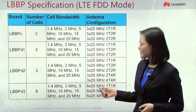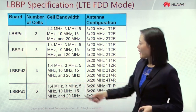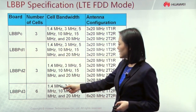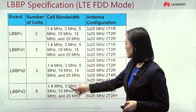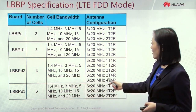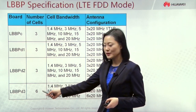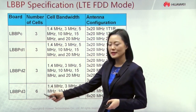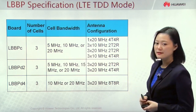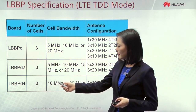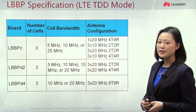This table lists four types of LBBP working in FDD mode: LBBP-C, D1, D2, and D3. Notably, LBBP-D2 is the only board that can support 4T4R antenna configuration, and LBBP-D3 can support six cells — the only board with that capability. For TDD mode, there is one new LBBP-D version board: LBBP-D4, which can support up to 8T8R antenna configuration.